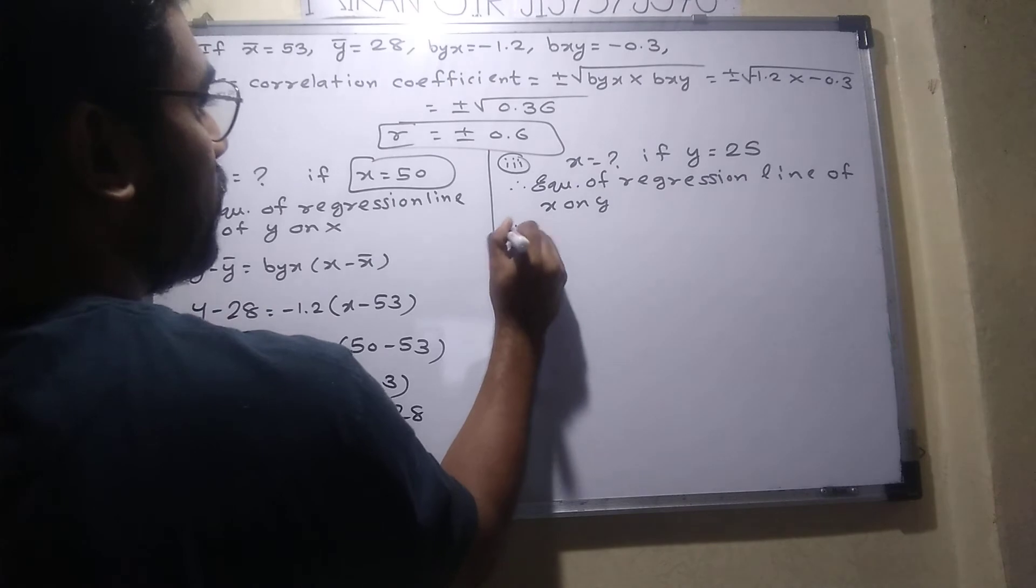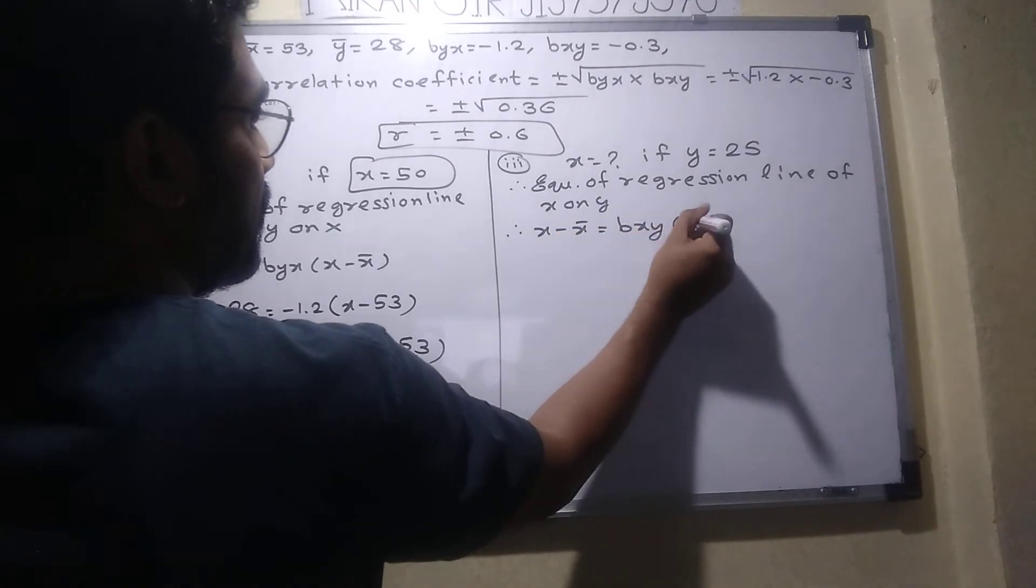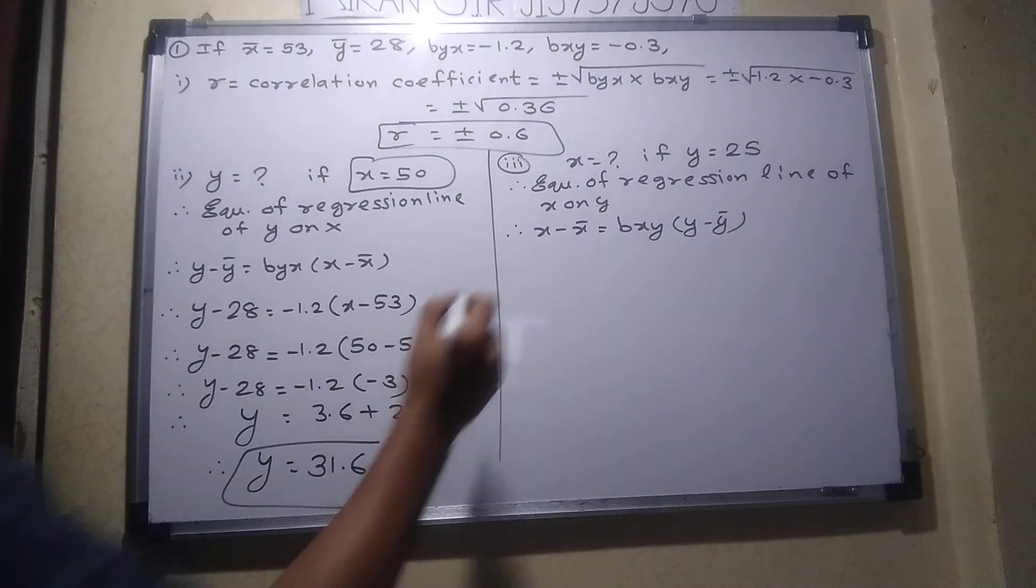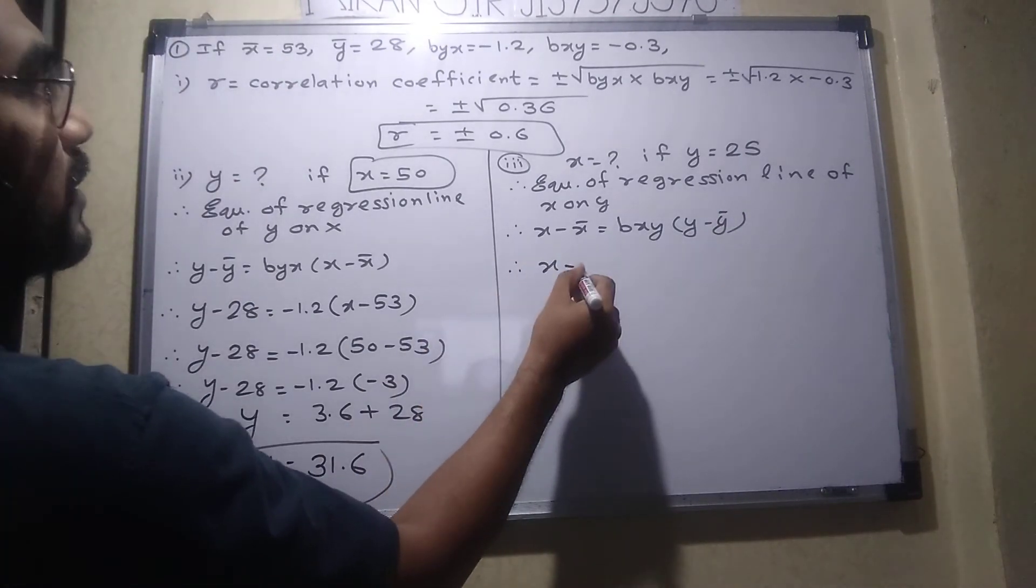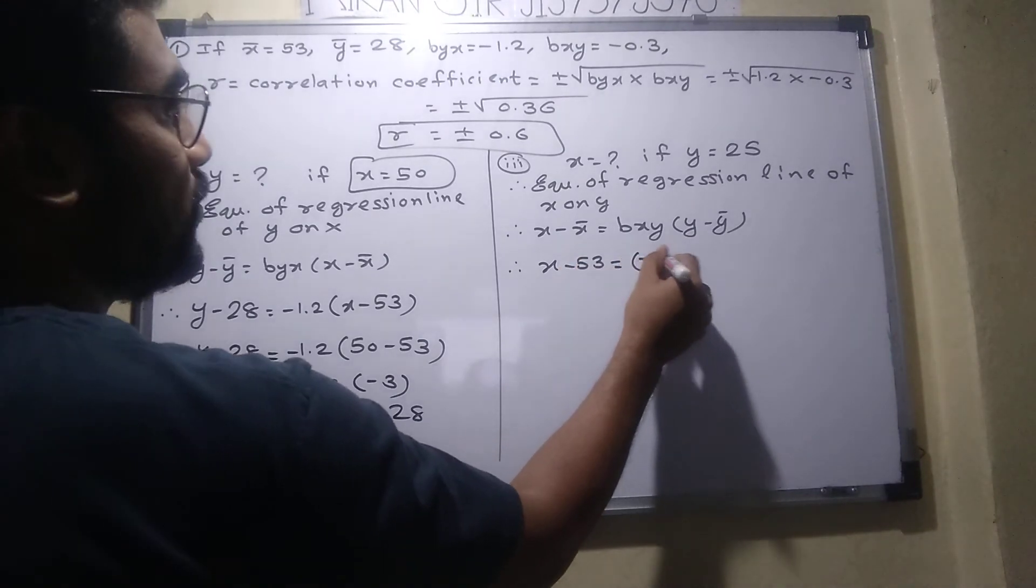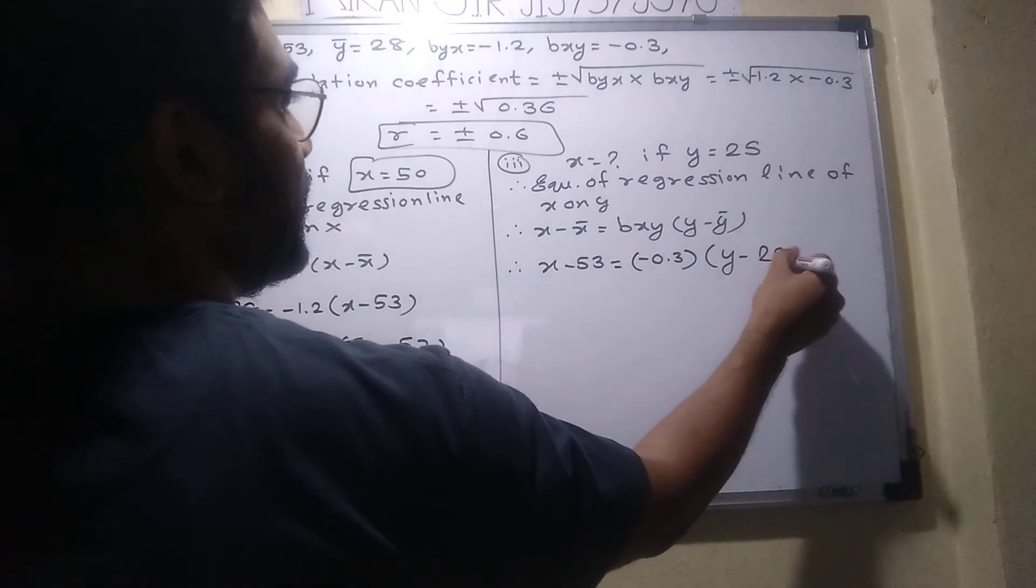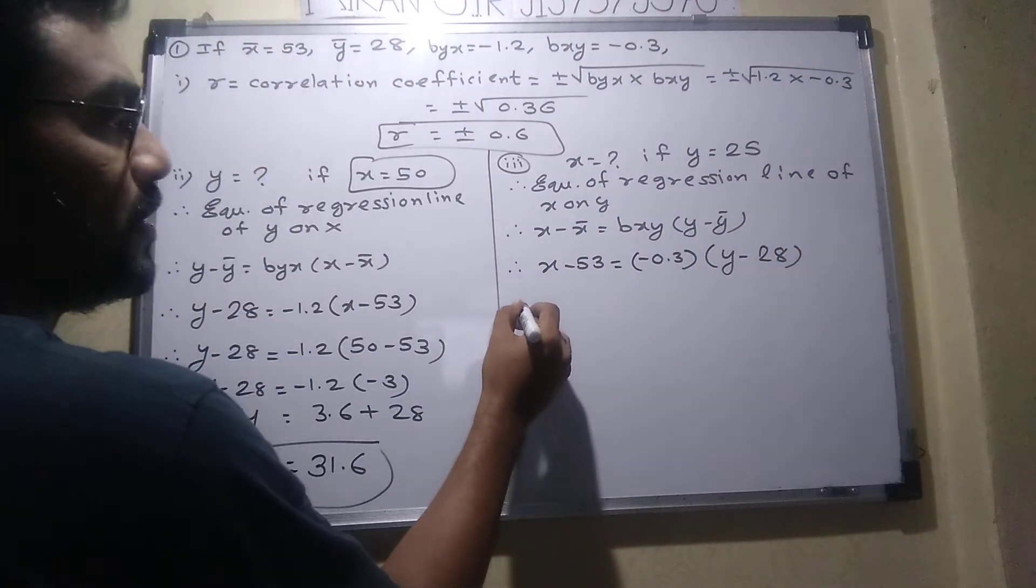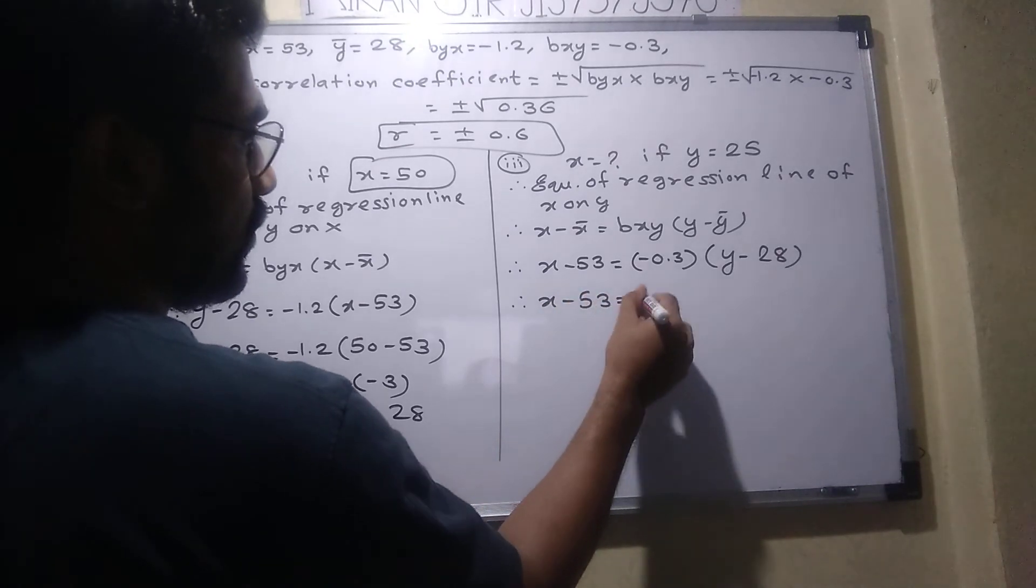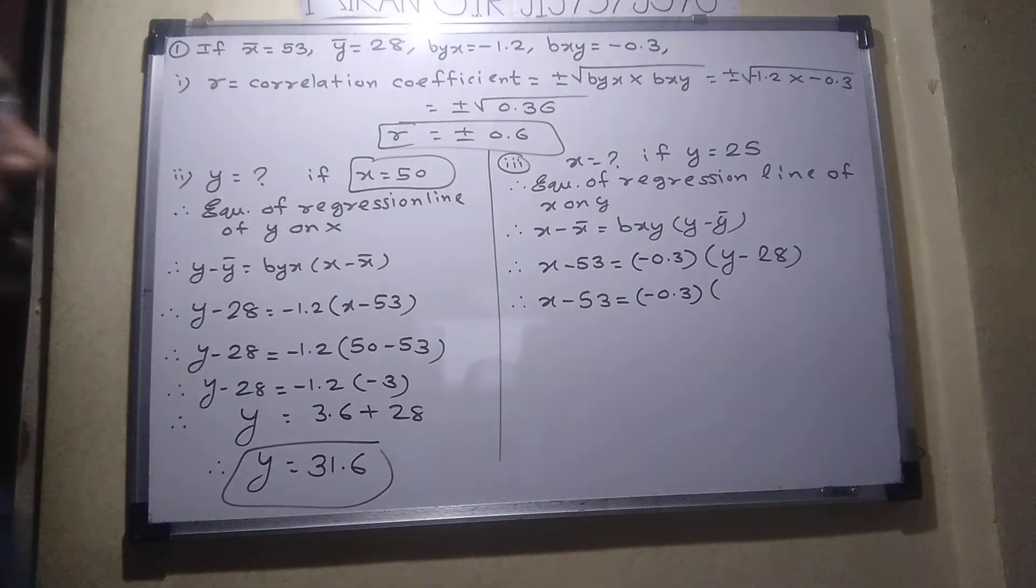What is the formula? x minus x̄ equals bxy times y minus ȳ, am I right? x̄ is 53, bxy minus 0.3, ȳ is 28, y is 25.